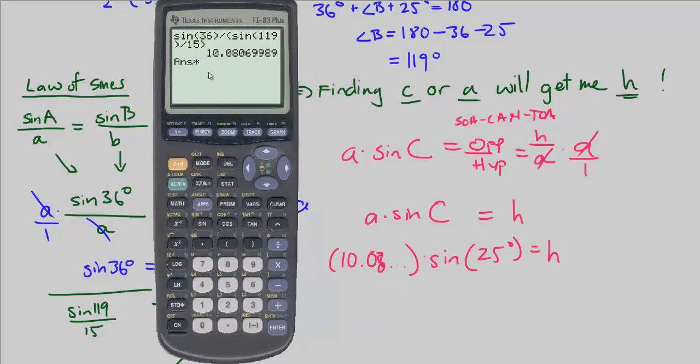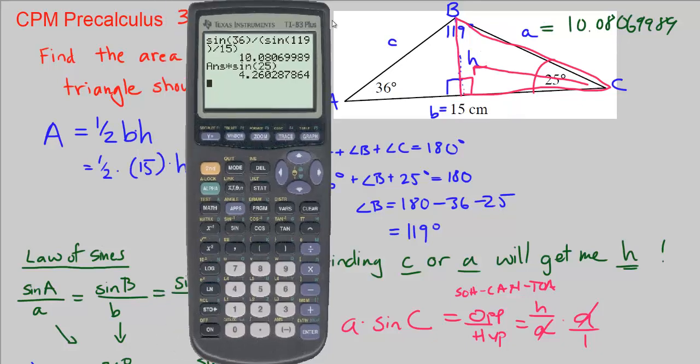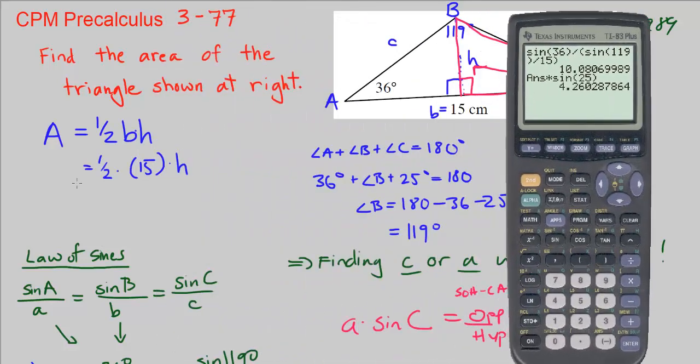See how it's still there, I'm just going to say times, so it's going to use that, times sine of 25 degrees, and that is h. So I'm left with h equals 4.260287864. We know the units are centimeters because we're given centimeters for the base.